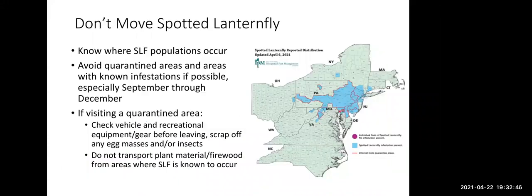One thing you can do is make sure you don't move spotted lanternfly. Familiarize yourself with where populations occur and avoid those areas, or if you can't avoid them, be on alert — especially September through December when adults are laying eggs. If you are visiting a quarantined area, check your vehicle and any recreational gear or equipment for egg masses or adults. Don't transport plant material, firewood, or stones from areas where spotted lanternfly is known to occur.